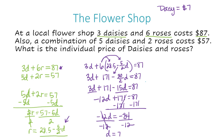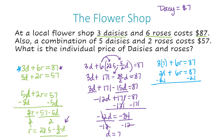Now I'm going to choose which equation to plug this 7 into, and I'll actually show you that you get the same answer either way. Let's do the top equation first: three D plus six R equals 87. I substitute D with 7: three times 7 is 21, so 21 plus 6R equals 87. Subtracting 21 from both sides gives 6R equals 66. Dividing both sides by 6, the sixes cancel and I'm left with R equals 11. So roses cost $11.